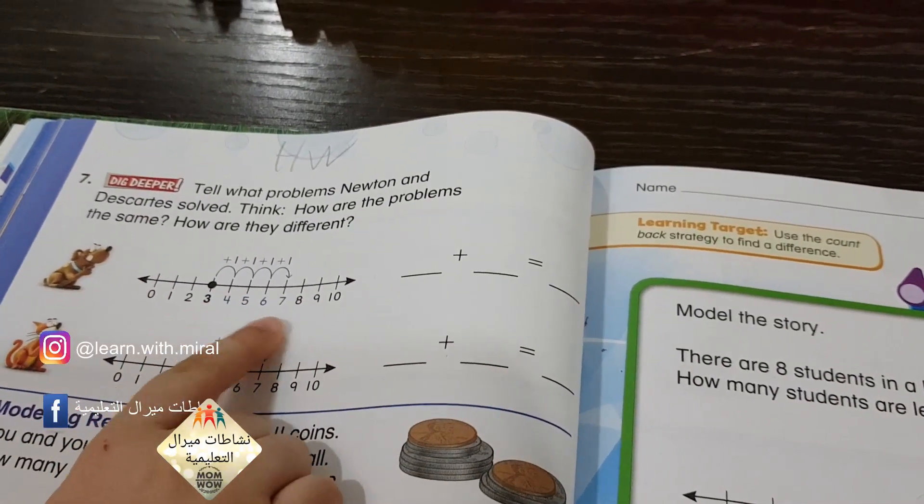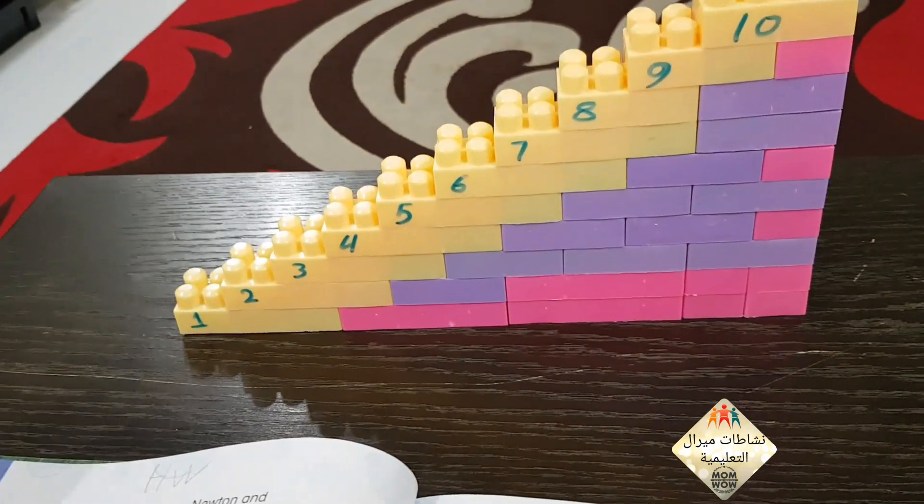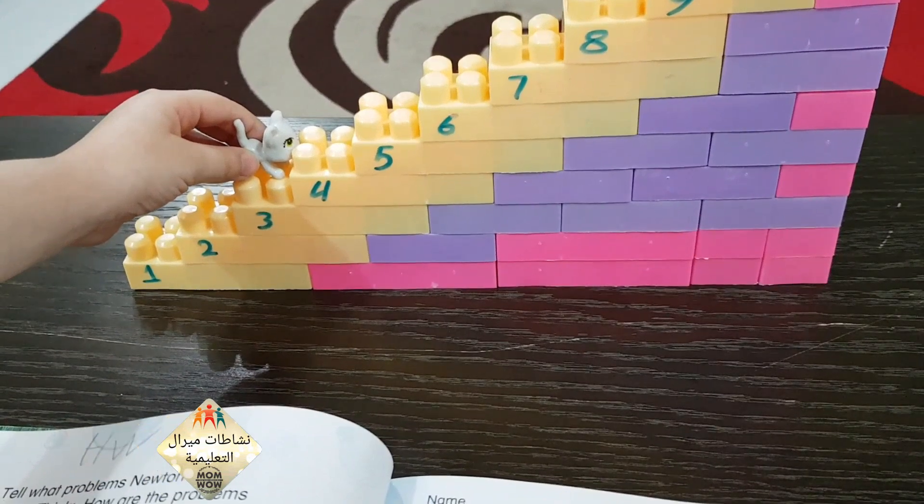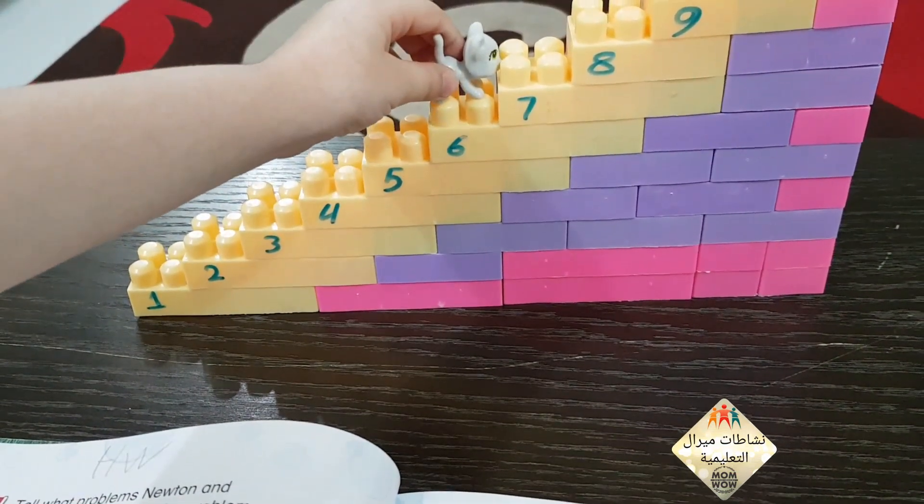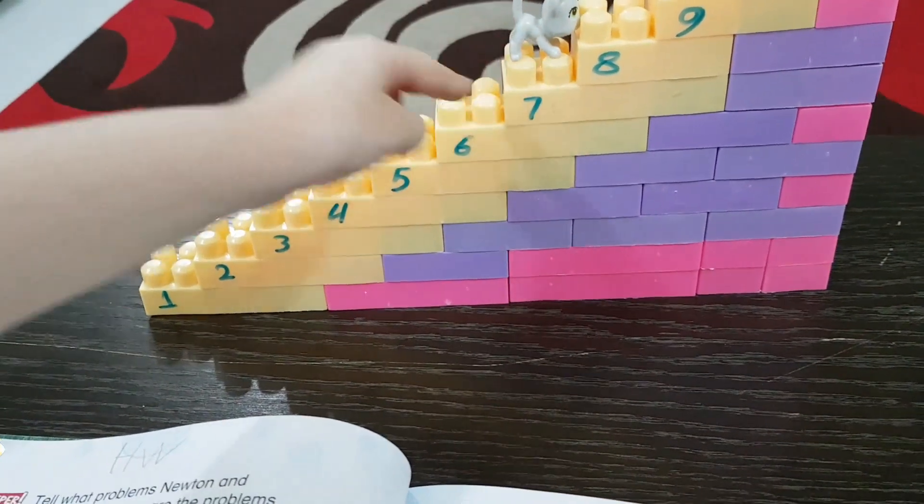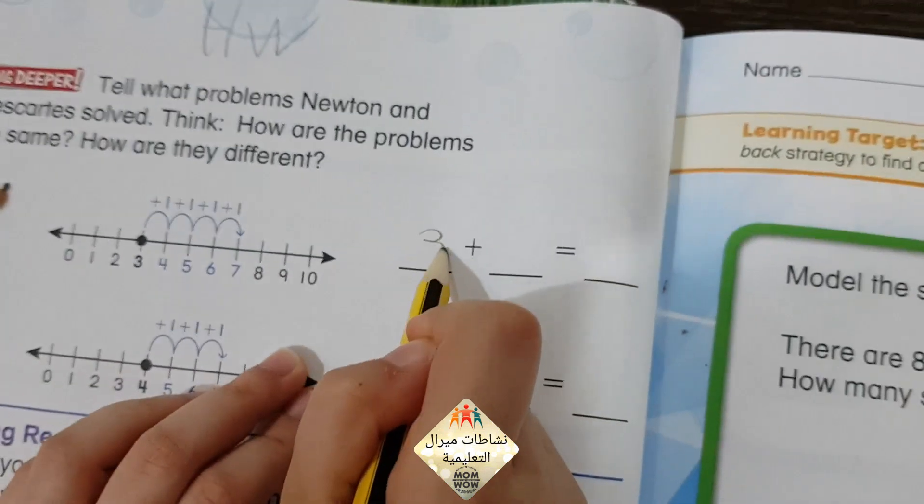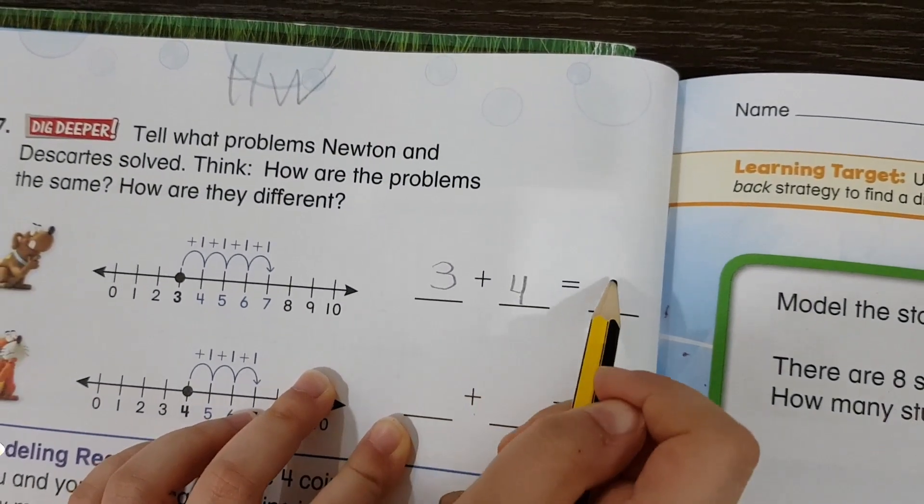Now 3 plus 4 equals 7. Let's see. 3. Now we will go 4 times: 1, 2, 3, 4. Equals 7. Now 3 plus 4 equals 7.